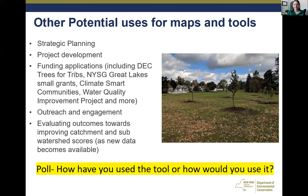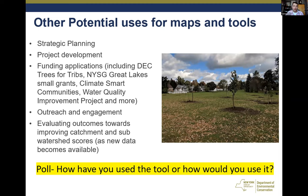Looking at the results, we have folks who are going to ground-truth areas to plan for projects using the tool, use the ecological conditions in grant applications, and use the tool for resiliency planning. There were also comments in the chat including: adding information from the tool to a watershed management plan, potentially assessing contributing environmental conditions for surficial drinking water systems, using it to optimize location of buffers to reduce erosion on stream banks, and checking against their SWAT model results for the Wasco Lake watershed.